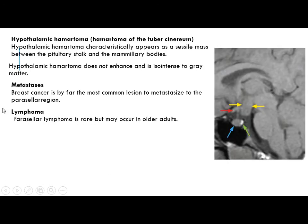The last entity is hypothalamic hamartoma, or hamartoma of the tuber cinereum. It has a characteristic appearance of a cystic mass between the pituitary stalk and mammillary body. Hypothalamic hamartoma does not enhance and is iso-intense to gray matter.